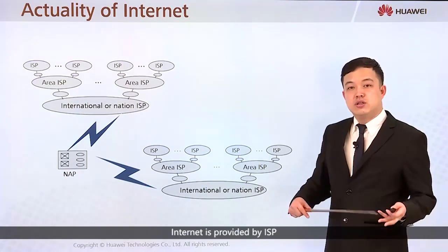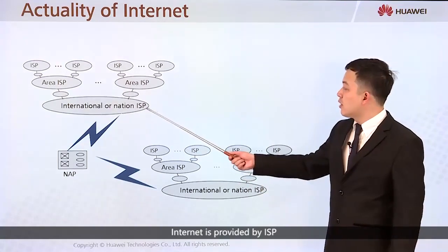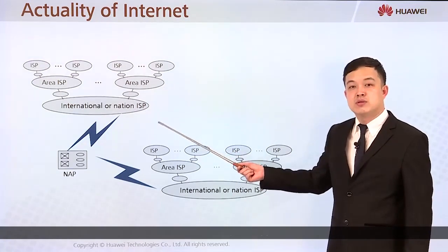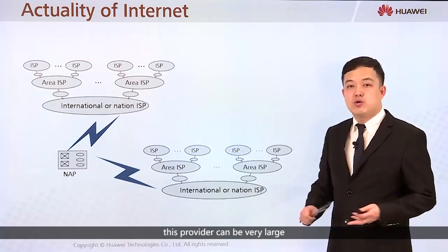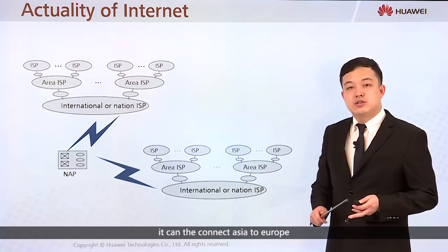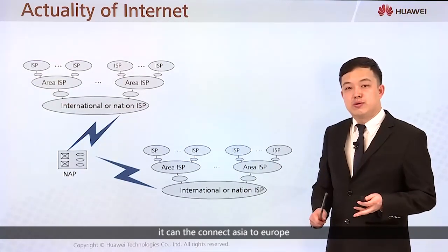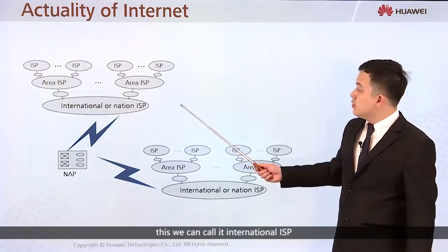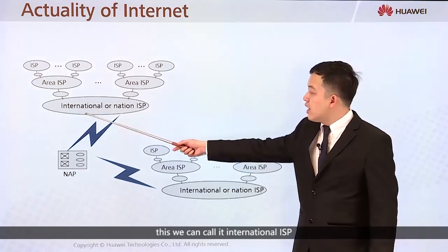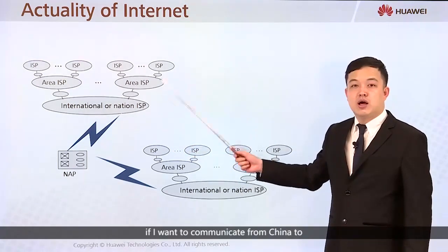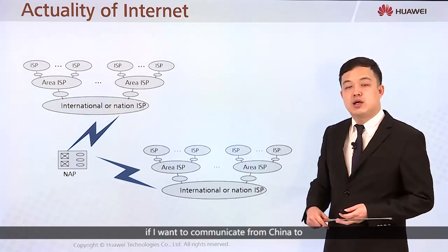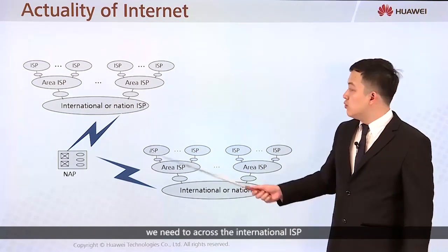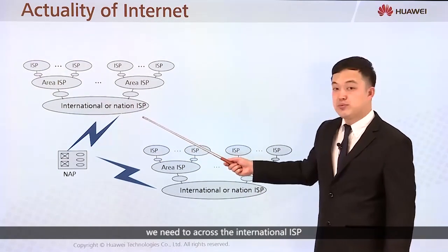The internet structure: the internet is provided by ISPs — Internet Service Providers. A provider can be very large, connecting Asia to Europe for example — spanning continents. We call these international ISPs. If we want to communicate from China to Europe or any other places, we need to cross an international ISP.